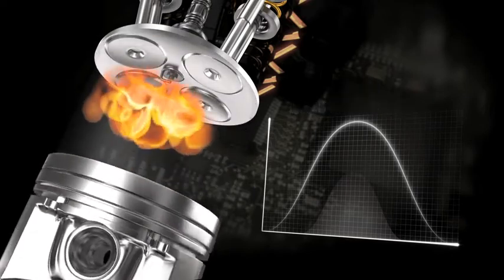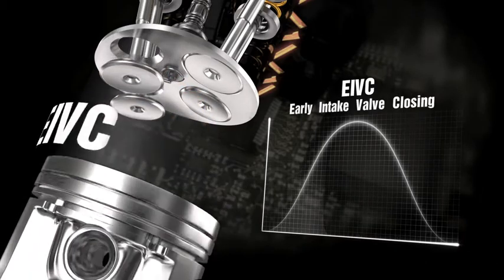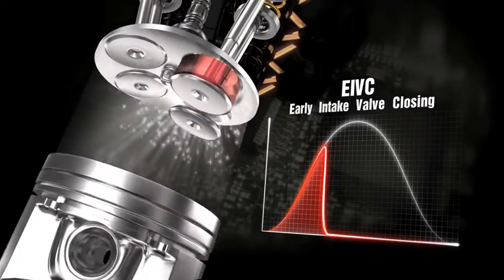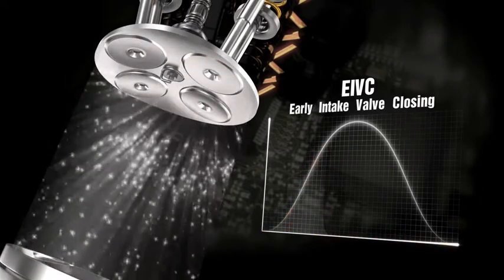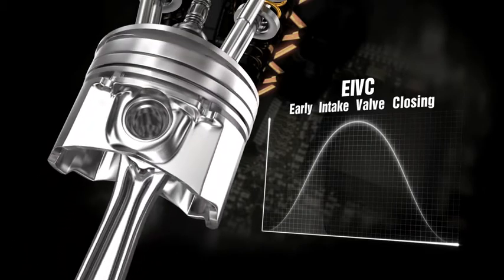At medium-low RPM torques and engine partial load, EIVC, early intake valve closing, optimizes volume efficiency and reduces pumping losses. Undesired back flow into the manifold is avoided, and air mass trapped in the cylinder optimized.